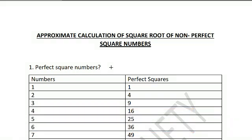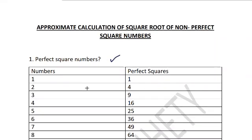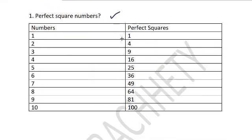First of all you need to know what is a perfect square number. So you know that 1 square is 1, 2 square is 4, 3 square is 9, 4 square is 16 and so on, 10 square is 100, 11 square is 121. This we already know.